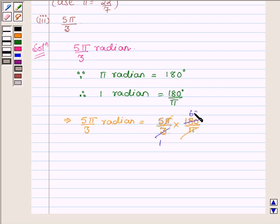3 into 60 is 180. So we have 300 degrees. Thus 5π/3 radians is equal to 300 degrees.